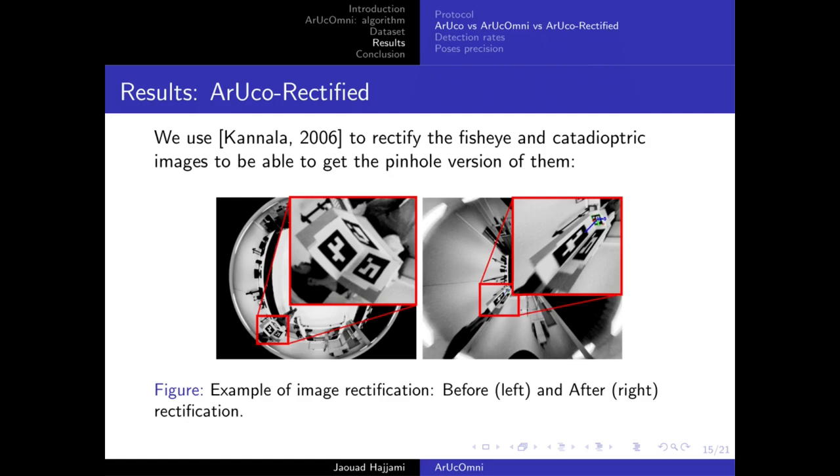In our evaluation, we consider a third method that we call ArUco-Rectified, which is a very naive method to detect markers on panoramic images using the rectification of the whole image before performing marker detection and pose estimation with the existing ArUco pipeline. As you can see in this figure, an example of such rectification where straight lines are indeed straight.